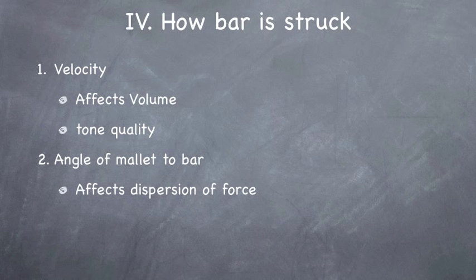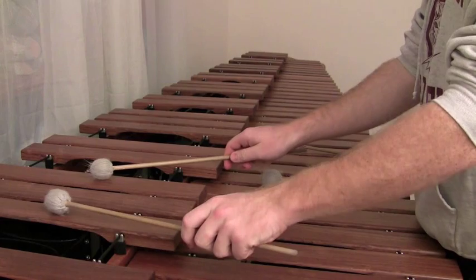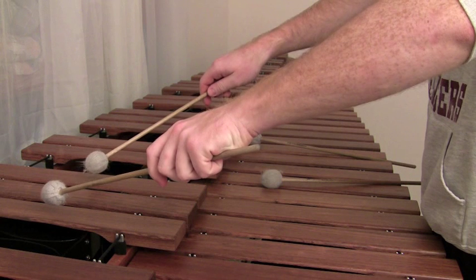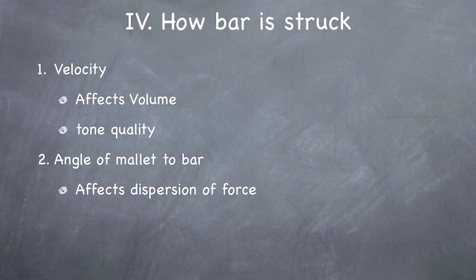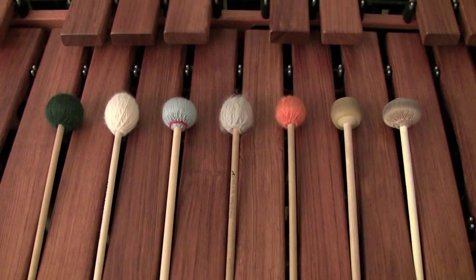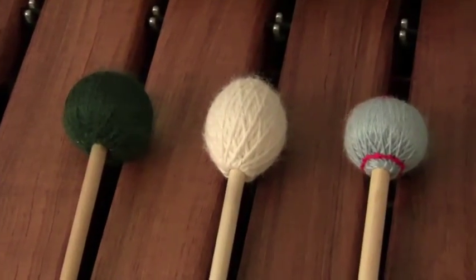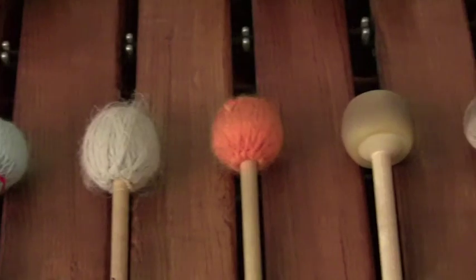The angle of the mallet to the bar. This affects how the force is dispersed into the bar. So a lot of people, when they want to fade out or get kind of a muddy sound when they're rolling, they will take their hand and elevate it so that the mallet shaft is at a more sharp angle to the bar. And that will kind of take some of the force and reflect it back into the hand, and it'll take some of the force and cause the mallet head to slide a little bit on the bar, and it'll take a little bit of the edge off the sound. And depending on your mallet head shape, doing this can alter how much of your mallet head is in contact with the bar, which will in turn also affect the sound.